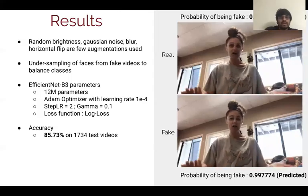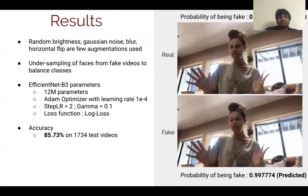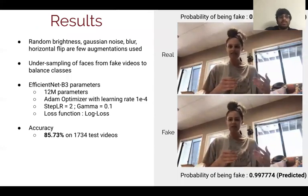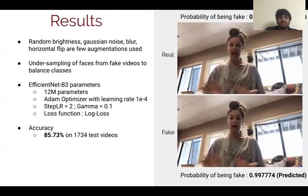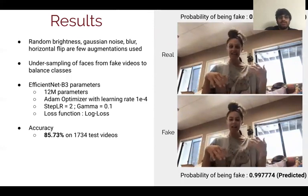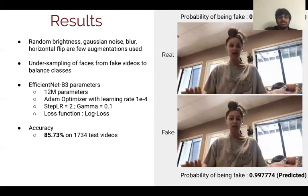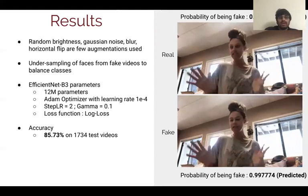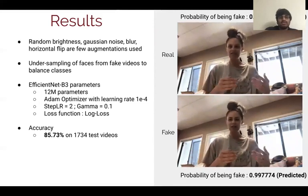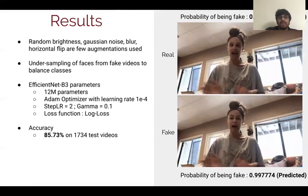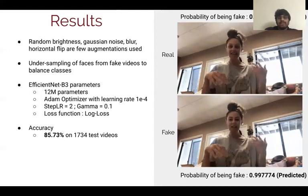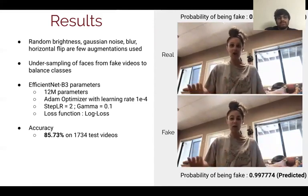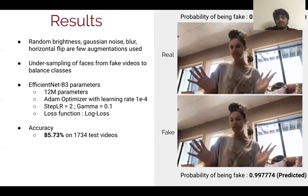Here are a few more details on this project. The augmentations used to generate more redundant data to make the model robust are random brightness, Gaussian noise and blur, and horizontal flip. I've performed undersampling of the fake videos to balance them with the fewer number of real videos.